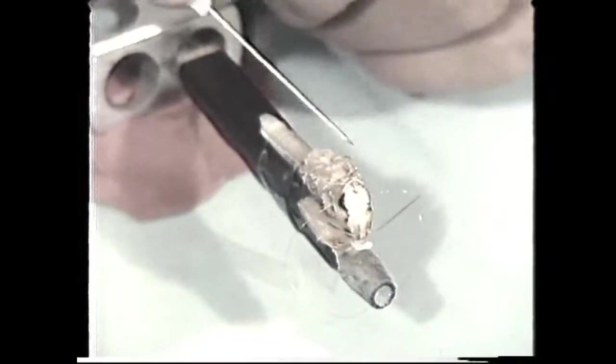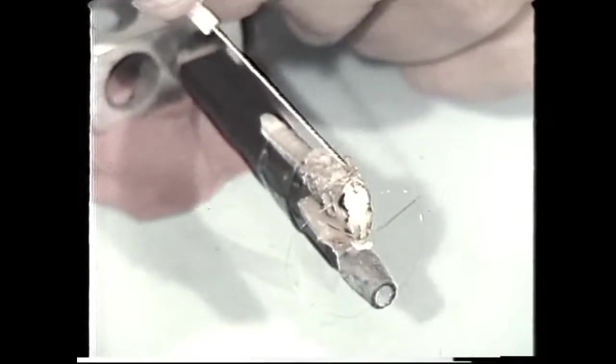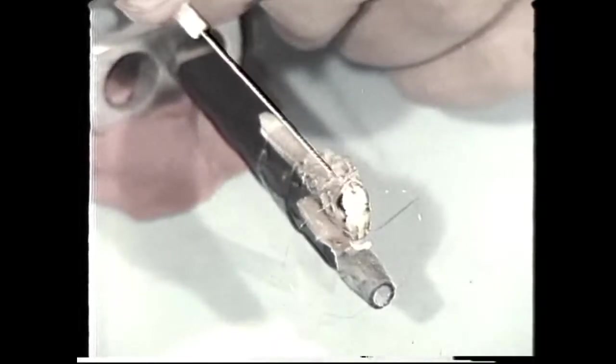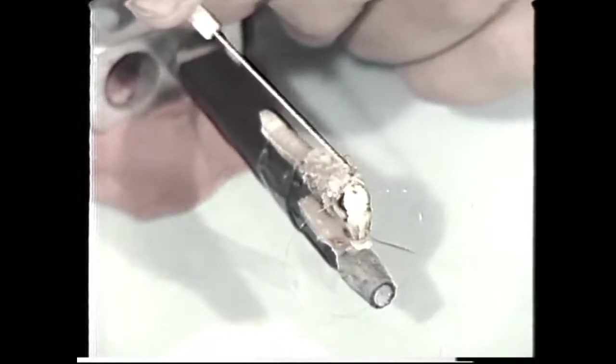We separate the wires so that they're not touching and cover the wound with petroleum jelly to protect it from desiccation.